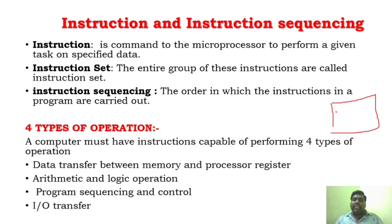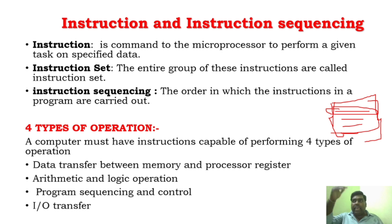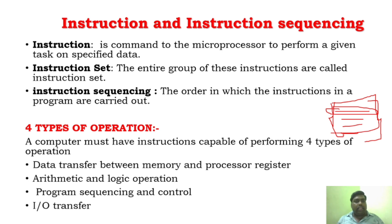What is meant by instruction sequencing? If this is a program, it is a group of instructions — we can also call it an instruction set. A single command is called an instruction, and this group of instructions is called an instruction set. Instruction sequencing is when the processor processes the instructions one by one in the same order. That is, we will be executing the instructions one by one in the computer.